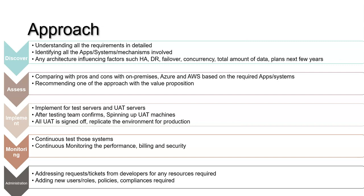Even in implementation, you first build test servers and UAT servers, then set up the number of production machines required. After that, you continuously monitor those applications to see where you can optimize your cloud spend, where you can save more money, and where applications are going wrong. If there are any failures, you need to know how to fix them. Continuous monitoring is essential even after going to production, because you're completely moving from a data center to a cloud environment.